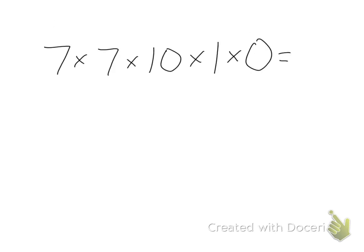So here I have this problem: 7 times 7 times 10 times 1 times 0. I can find this without multiplying because I know any number times 0 always equals 0.